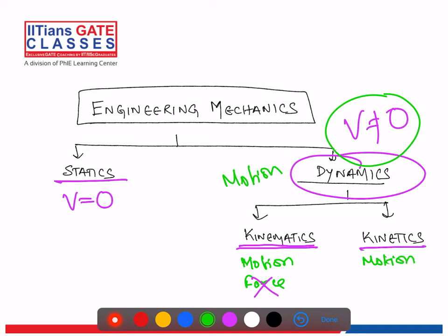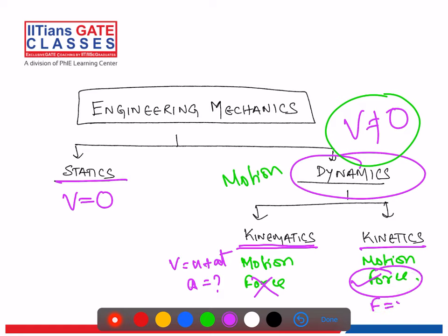In kinetics, we study the motion along with the force — that is, why the motion is happening. In kinematics, we use equations of motion like v = u + at to find acceleration, but we are not bothered about what caused the acceleration. In kinetics, we find the force causing the acceleration using F = ma.